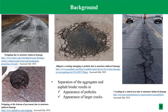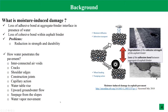Some alligator cracking and cracking in areas affected by moisture-induced damage are shown in a couple of pictures. The loss of adhesion between aggregate and binder, in addition to loss of cohesion within the asphalt binder itself, can cause stripping, resulting in a reduction in the strength and durability of asphalt mixes. Moisture is always available to the pavement through penetration via interconnected air voids, cracks, shoulder edges, contraction joints, capillary action, water table rise, and upward groundwater flow. Moisture-induced damage is a complex phenomenon resulting from physical, mechanical, and chemical interactions between the asphalt binder and aggregate.